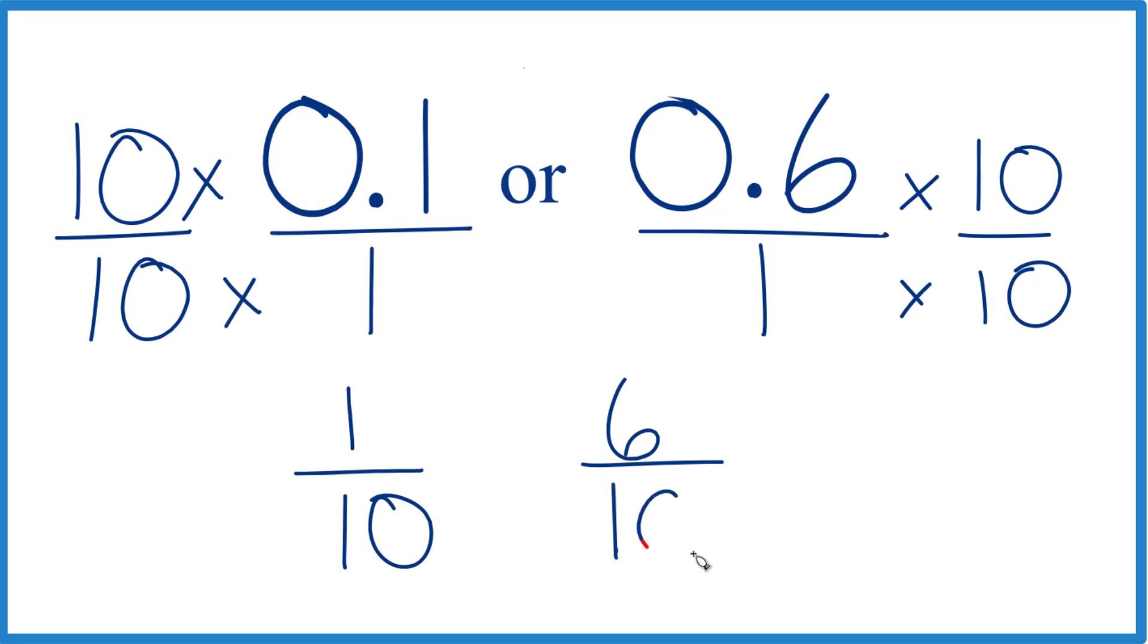Now we have the same denominators here. We can just compare the numerators, and you can see 6 is greater than 1. So 6 tenths is gonna be greater than 1 tenth, and these are the same thing, right?